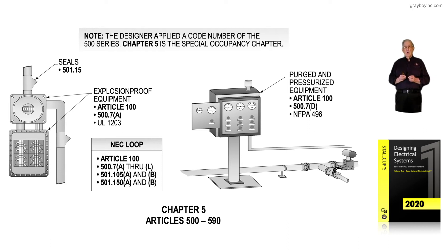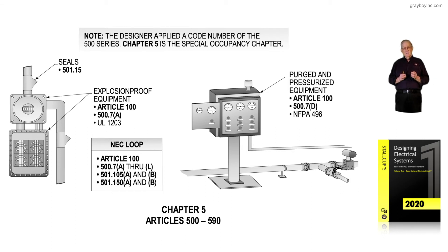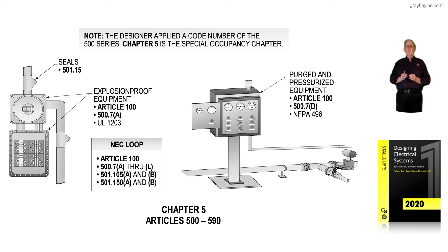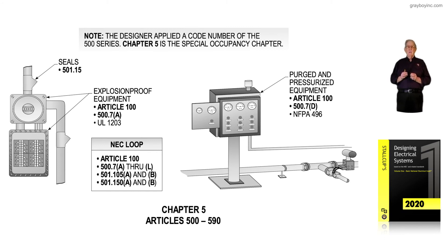For purged and pressurized equipment you also have to use NFPA 496. The speaker chaired that committee for about 12 years. It included NFPA 497, which deals with gases and vapors, and NFPA 499, which deals with dust, flyings, and that kind of thing. NFPA 496 deals with purged and pressurized equipment. The definition of a purged and pressurized system is found in Part 3 of Article 100 in alphabetical order. 500.7D now deals with and allows purged and pressurized equipment to be used.